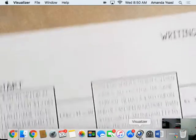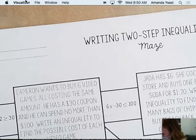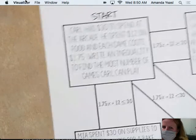Let's look at the writing two-step equations maze. You can do it digitally or on paper by printing it out.